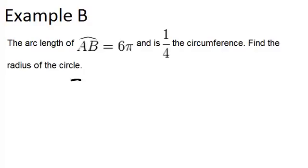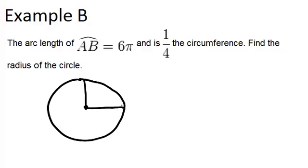Let's try to draw a picture here. We have an arc AB which is 1 fourth of the circle. So I'm going to draw in approximately 1 fourth of the circle and call this AB. And we know that this length is 6π.